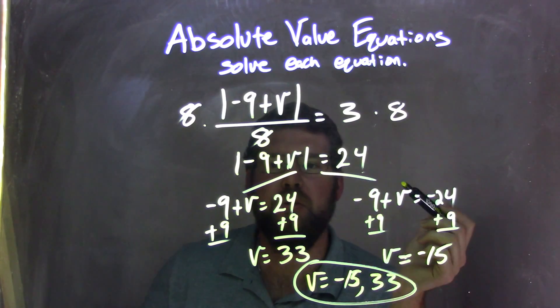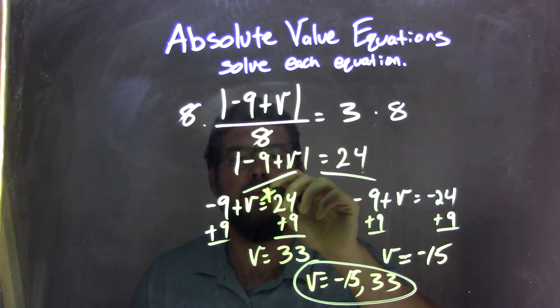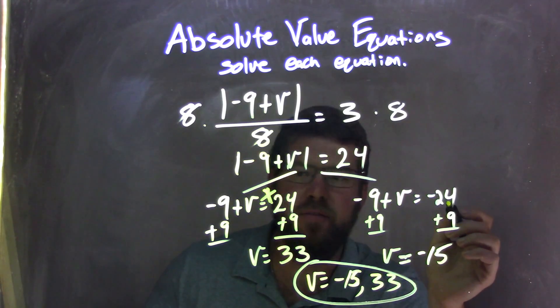I then can break this apart into two equations: negative 9 plus V equals positive 24, and negative 9 plus V equals negative 24.